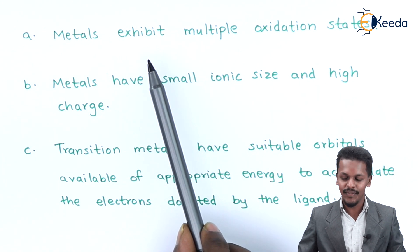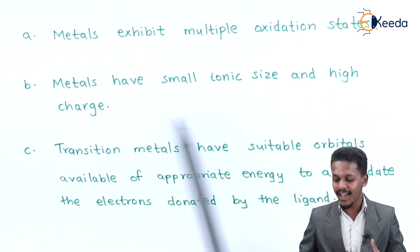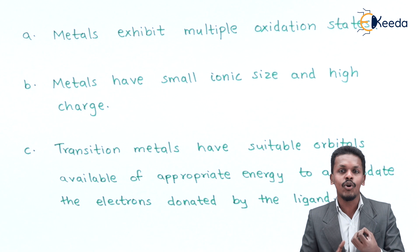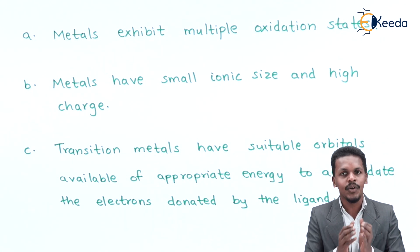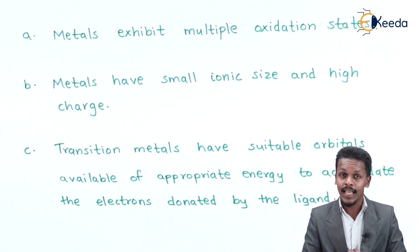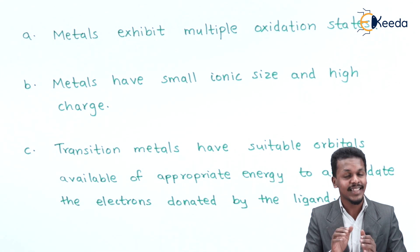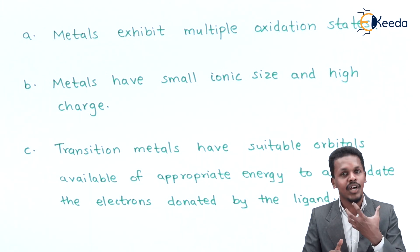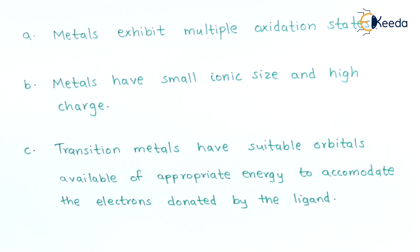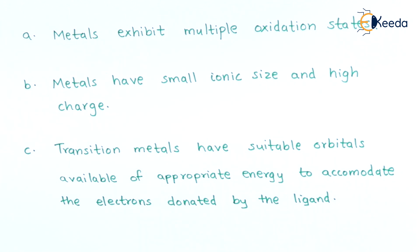The second reason is the metal has a small ionic size and high charge. If the electron is easily removed from the outermost shell of a transition metal, a positive charge is occupied on the metal and the ionic size gets reduced. The smaller the ion, the more charge it will occupy. The third reason is the transition metal has suitable orbitals available of appropriate energy to accommodate the electrons donated by the ligands.